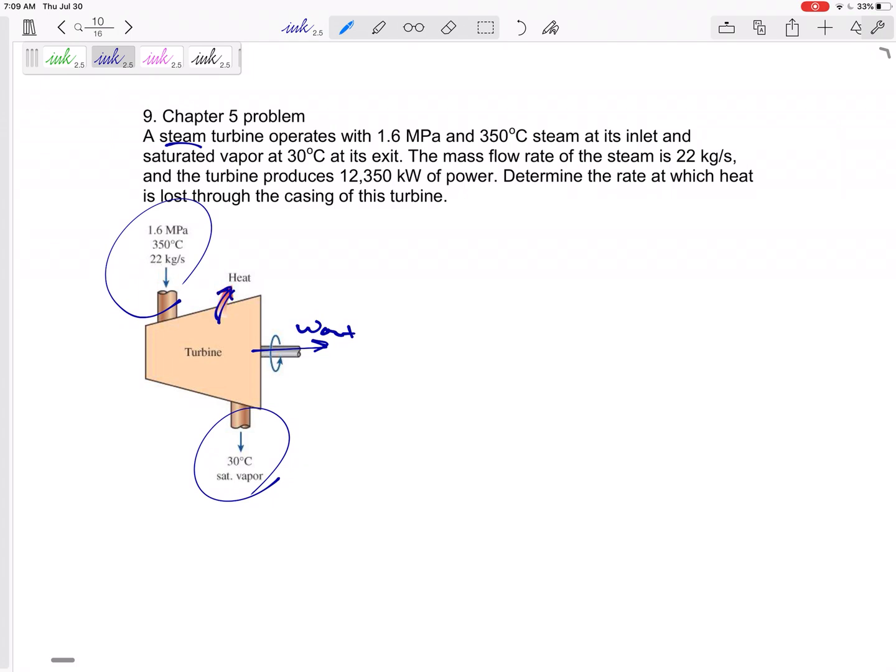Normally we neglect the Q, but if it says there's some heat loss, then we will take that into account. Also, it didn't tell us any velocity so we don't have kinetic energies, it didn't tell us any heights, we don't have potential energies.